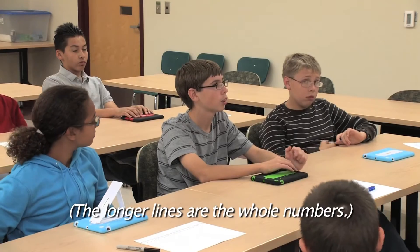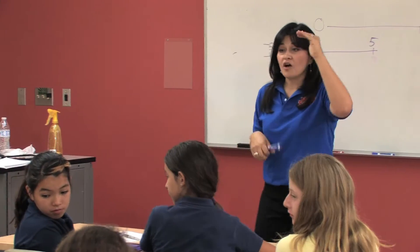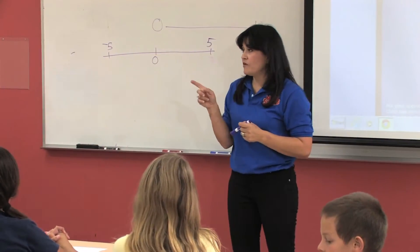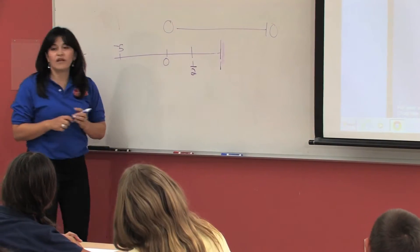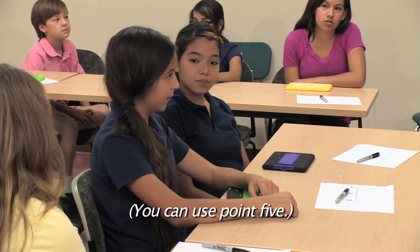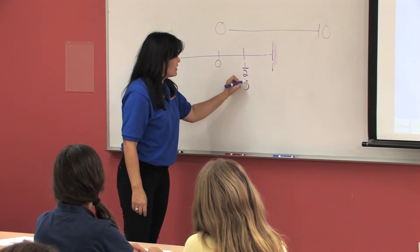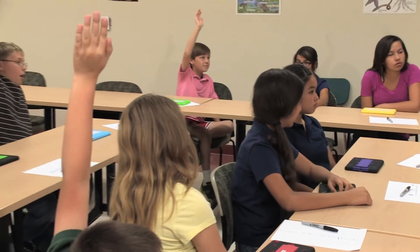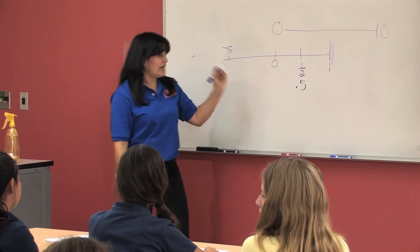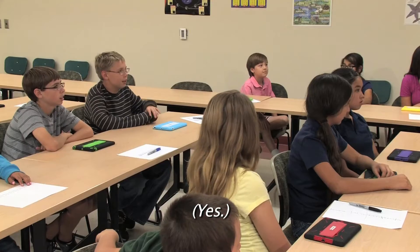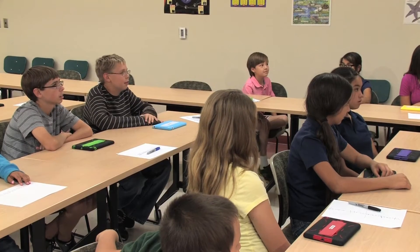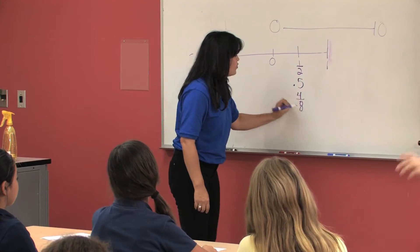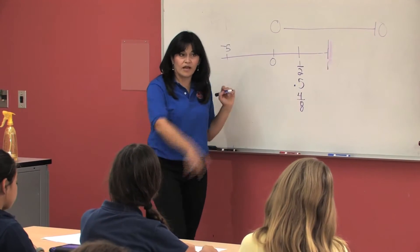The longer lines are the whole numbers — the taller lines are the whole numbers. Did everybody notice that before? What's another way that I could write one half? You can use 0.5. What's another way I can say 0.5? Four eighths. Four eighths — did we have that in the game? Yes. So four eighths was another equivalent way to say one half.